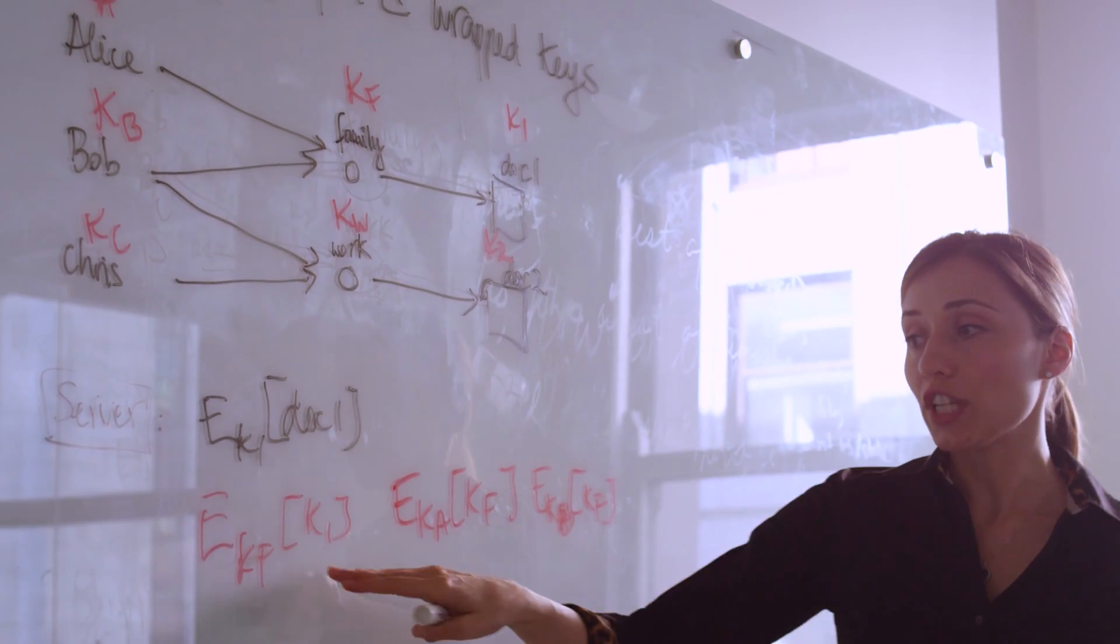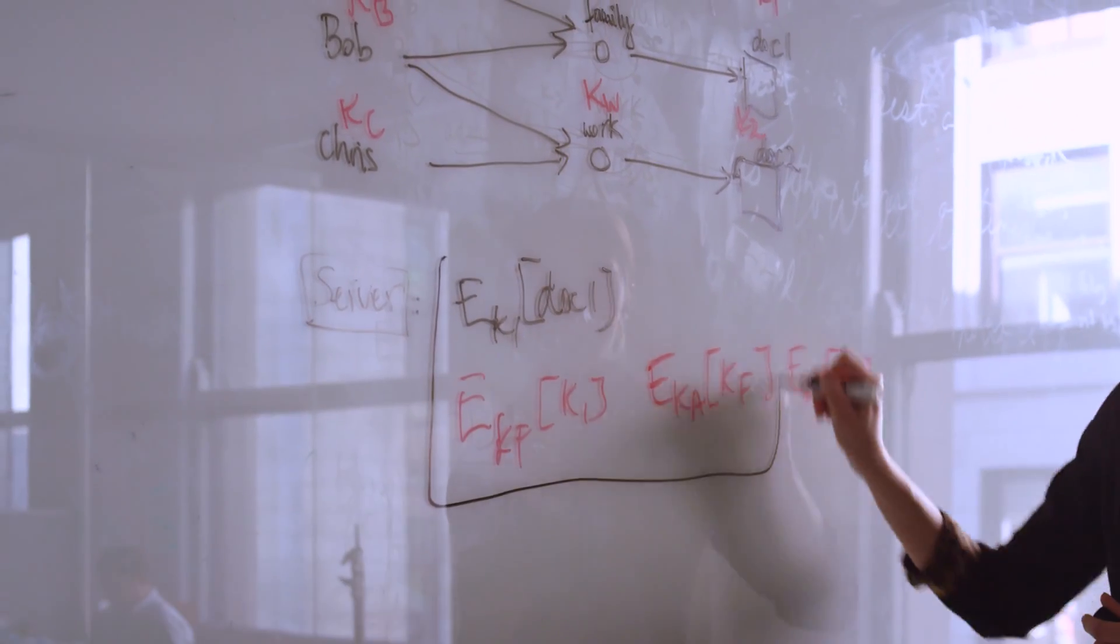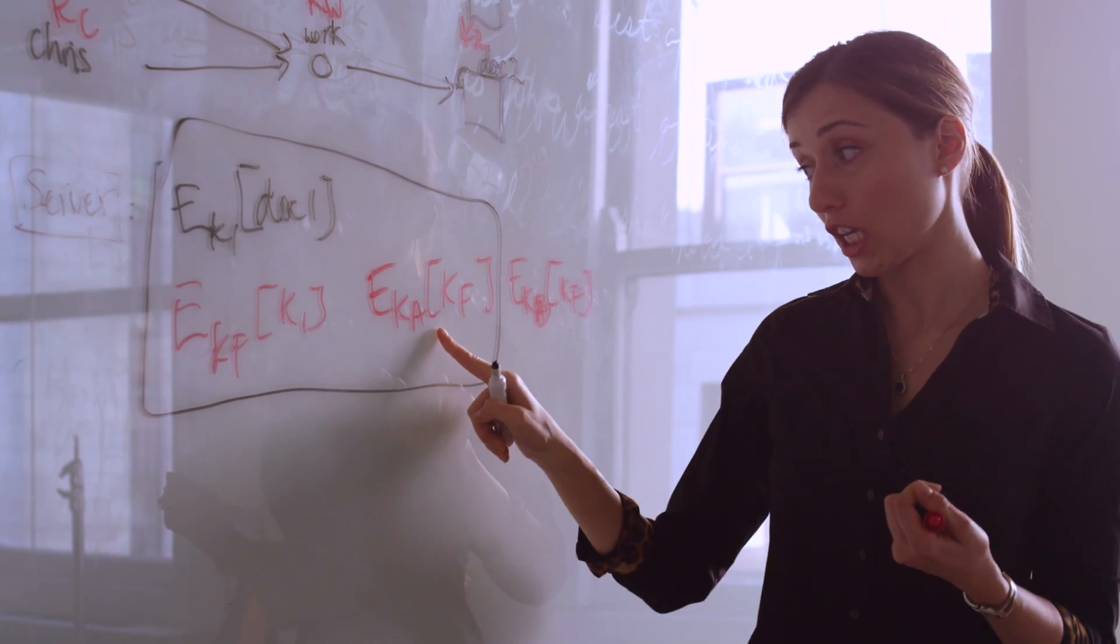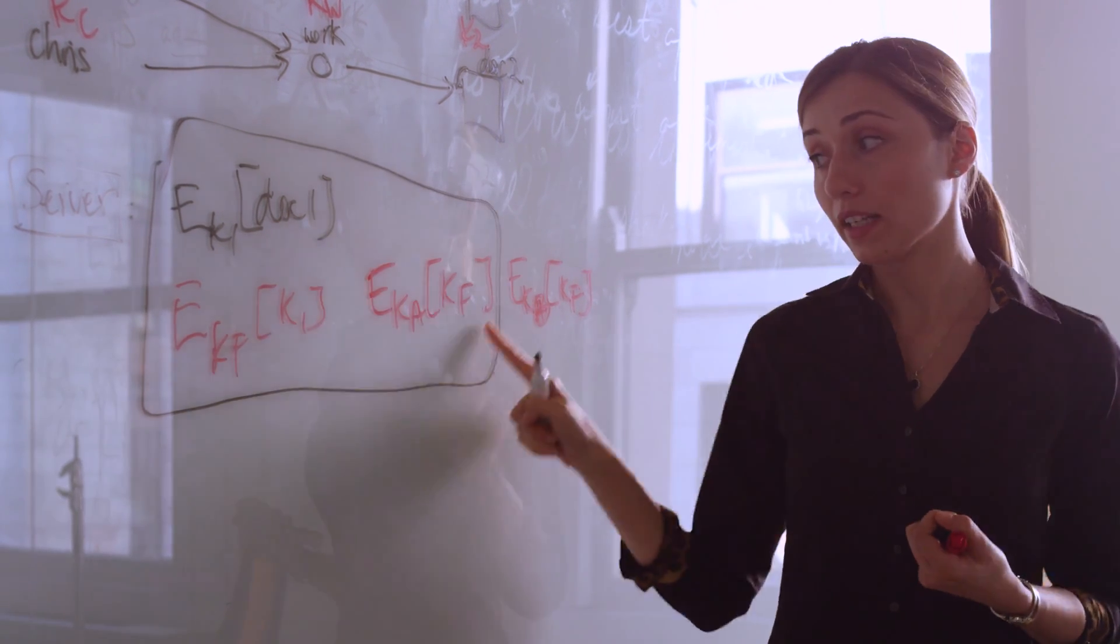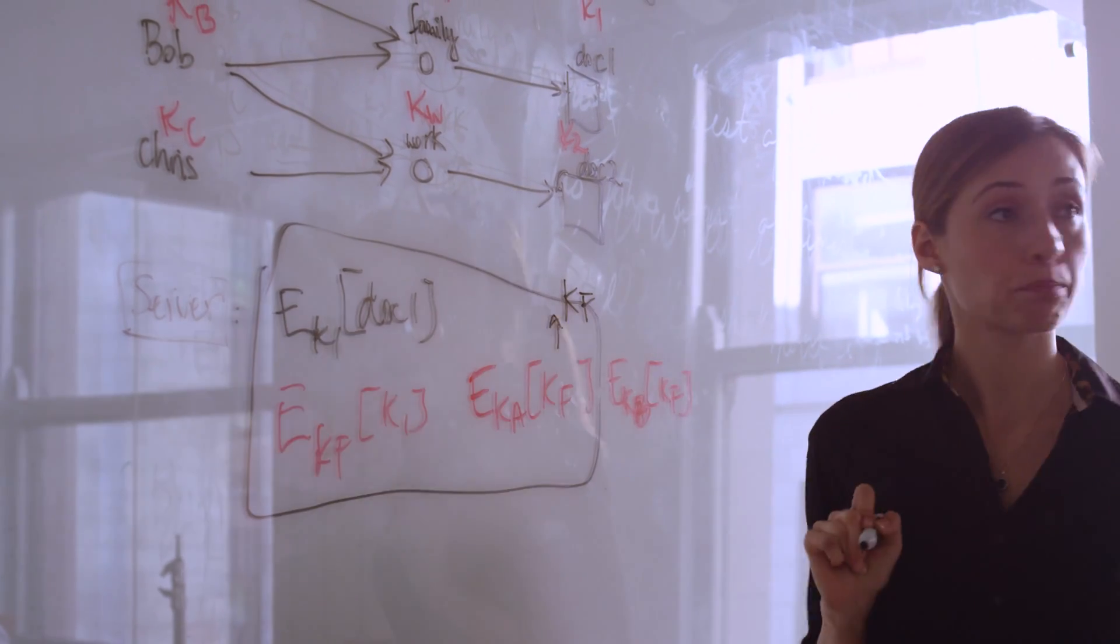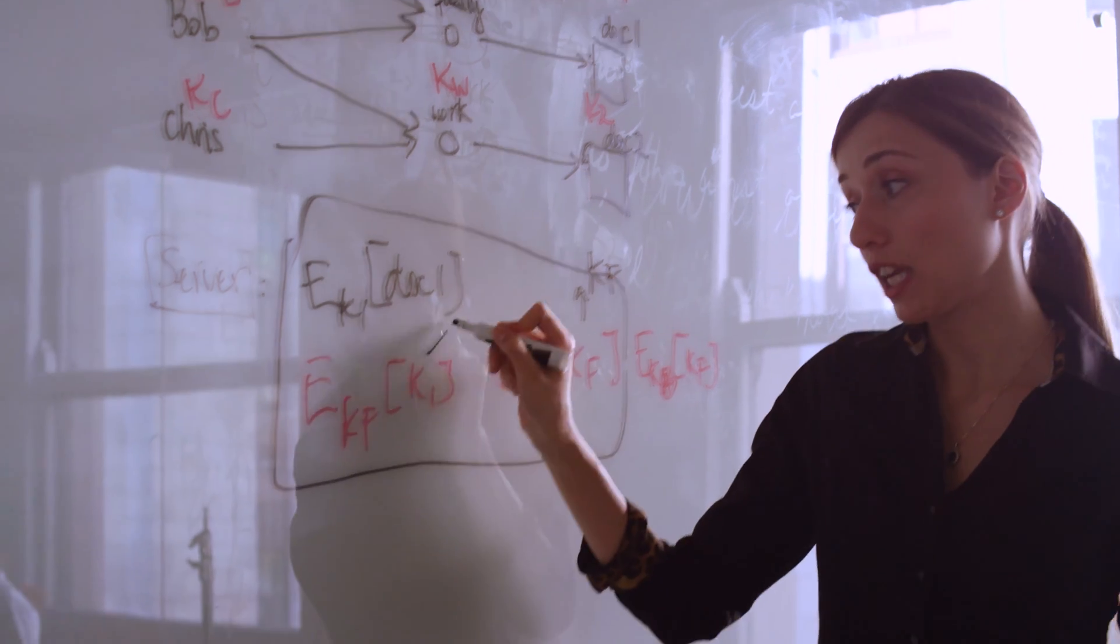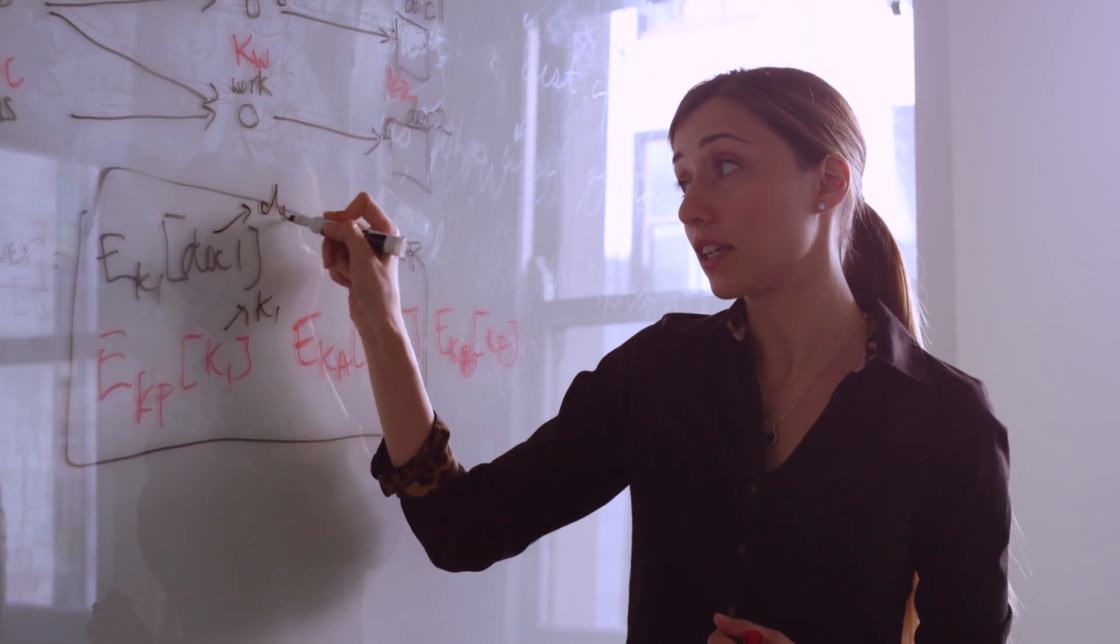So now when Alice comes online, how does she get access to this document? Well, she downloads the various relevant pieces of information. She uses Alice's key, her key, to obtain the key for the family by decrypting this quantity. So she can obtain key for the family. Then she uses the key for the family to decrypt K1. And with K1, she can finally decrypt document 1.